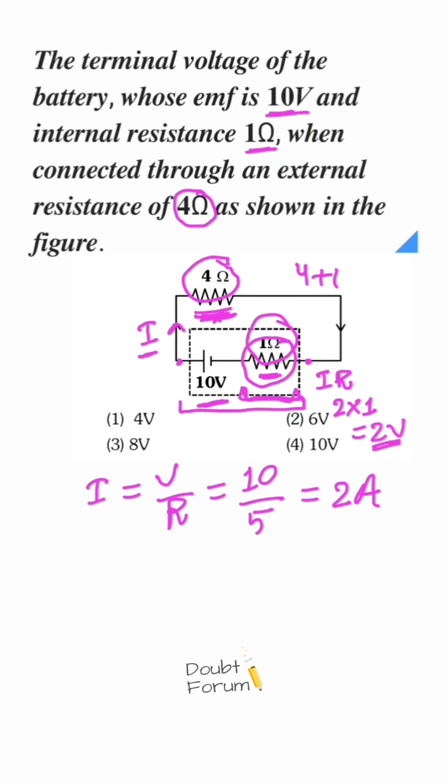So the terminal voltage of this battery, in this case, would be EMF minus voltage drop in its internal resistance, so its value comes out to be 10 volts minus 2 volts, that is 8 volts. So option C is the correct one.